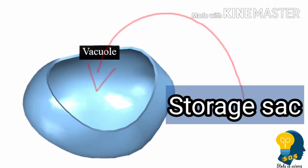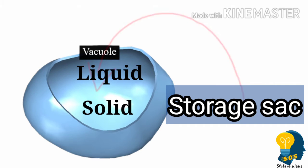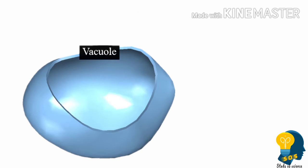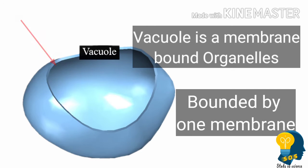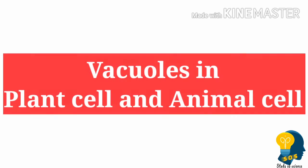The function of the vacuole is to store things — it stores both solid and liquid things. Hence, vacuole is called a storage sac. So, a vacuole is a membrane-bound organelle bounded by a single membrane, and its function is to store things.